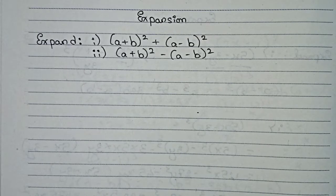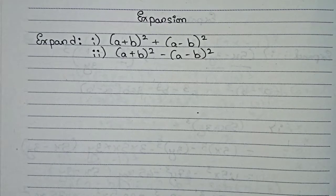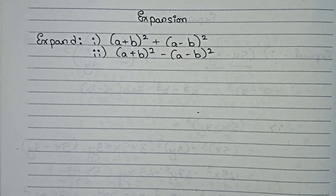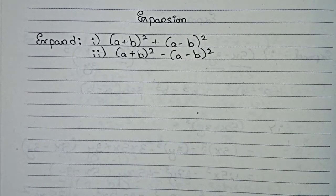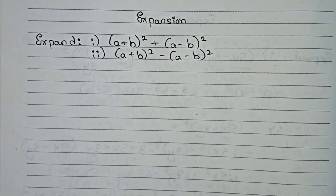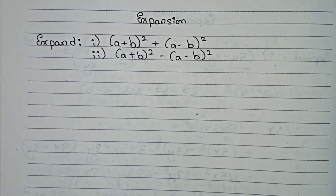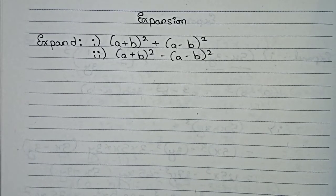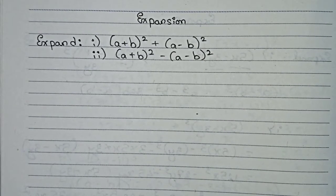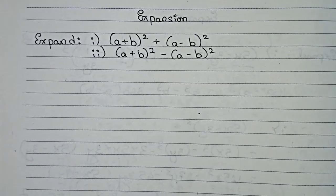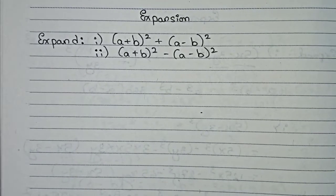Hello guys, welcome to this video. In this video we are going to solve expansion problems. Our questions are: expand (a + b)² + (a - b)², and (a + b)² − (a − b)². For solving these two questions we need two identities.